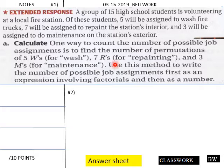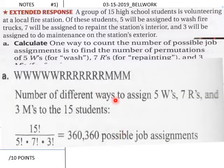Okay, welcome back. Here is the solution for the bell work. The number of different ways to assign 5 W's, 7 R's, and 3 M's to the students is 15 factorial over 5 factorial times 7 factorial times 3 factorial, which equals this many possible job assignments.